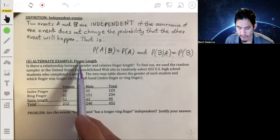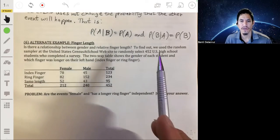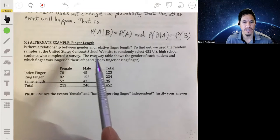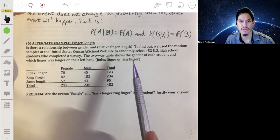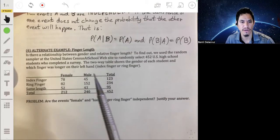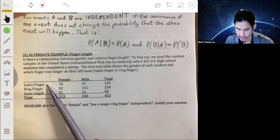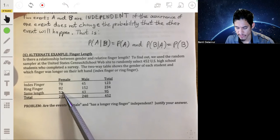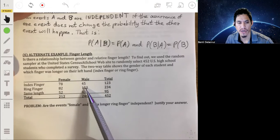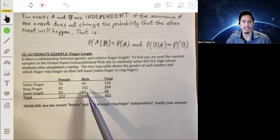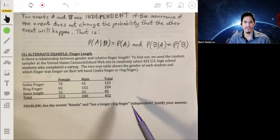Okay, so here we have, we're talking about finger length and we want to see is there a relationship between gender and finger length. So to find out, we used the random sampler at the United States Census at School website to randomly select 452 US high school students to complete a survey. A two-way table shows the gender of each student and which finger was longer on their left hand, index finger or ring finger. So here we have the female students: 78 of them had a longer index finger, 82 of them had a longer ring finger, 52 of them had the same length fingers. For males, 45 of them had a longer index finger, 152 had a longer ring finger, and 43 of them had the same length finger. So the problem is, are the events female and a longer ring finger independent?